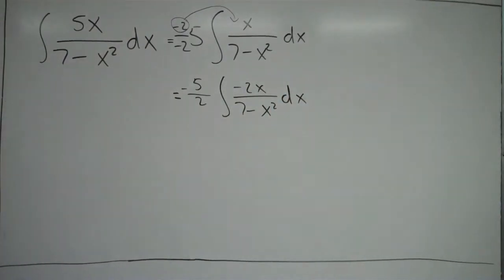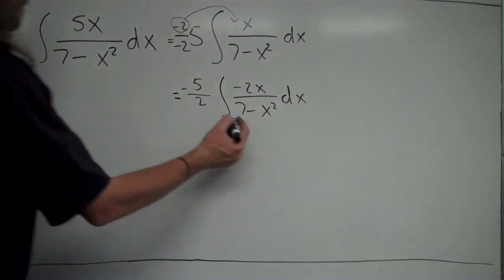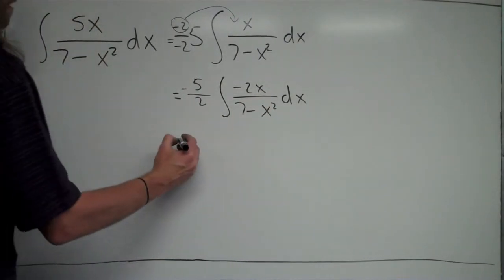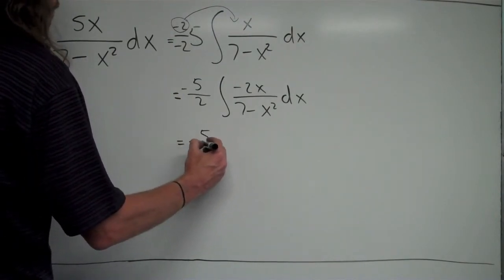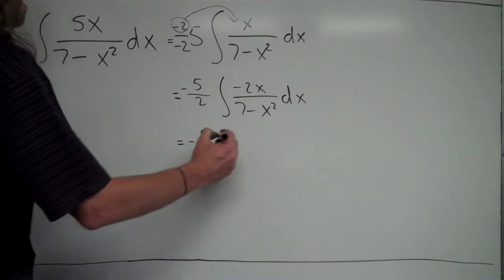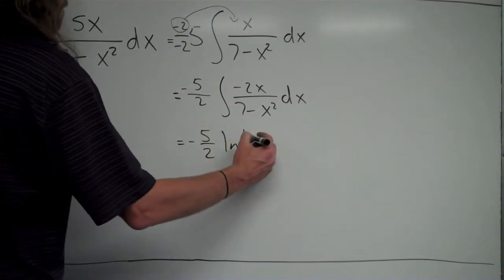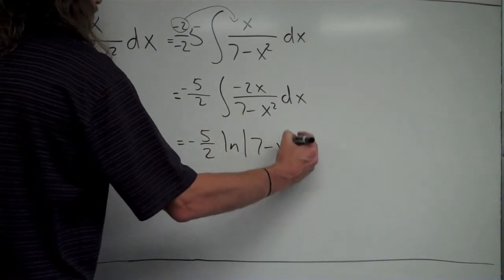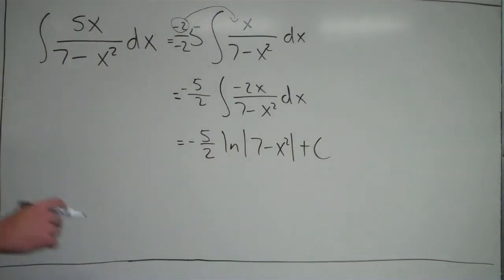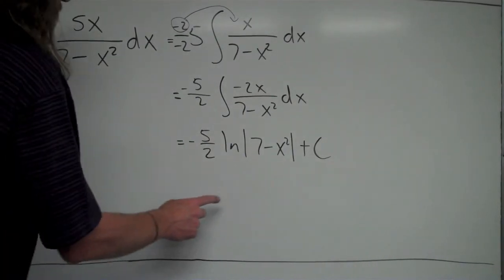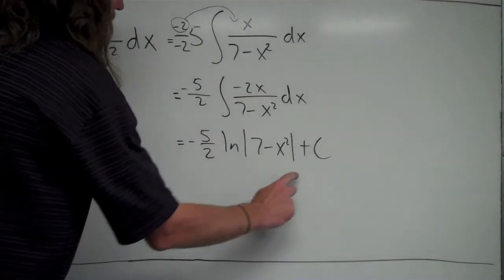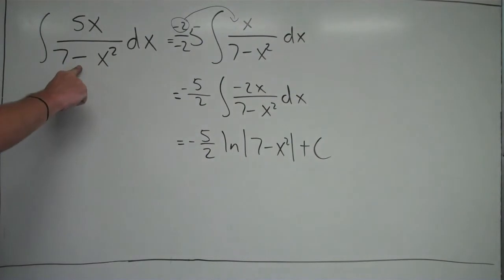Now I have it set up perfectly to use the natural log rule, since the derivative of the bottom equals the top. Applying the natural log rule, it's just negative 5 halves in front — the constant goes along for the ride — natural log absolute value of the bottom, plus C. That is the antiderivative. With any antiderivative you can always check by taking the derivative of this, and it should simplify back to the original.